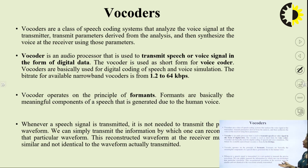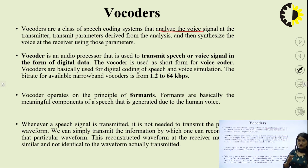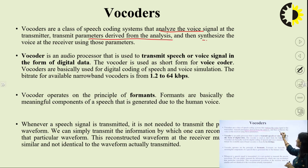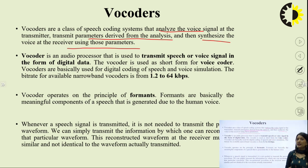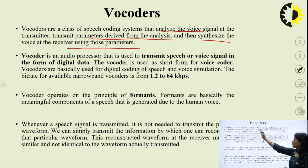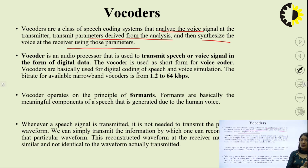Vocoders are a class of speech coding systems that analyze the voice signal at the transmitter, then transmit parameters derived from analysis, and then synthesize the voice at the receiver using those parameters. There are three steps: first is analysis at the transmitter side, second is transmission of those parameters, and third is synthesis at the receiver side. Analysis at the transmitter and synthesis at the receiver are the main functions of the vocoder.